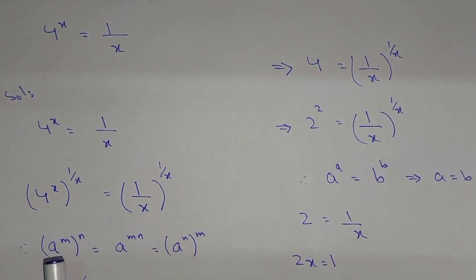So here we have the property: a^(m*n) outside the bracket can be written as (a^m)^n. So similarly, it can also be written as a^n and m outside the bracket.